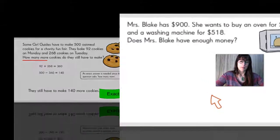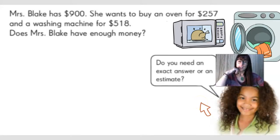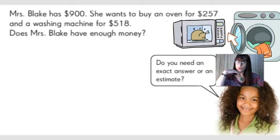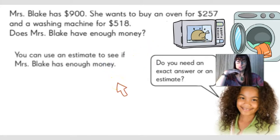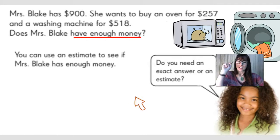Here we have a different scenario. Miss Blake has $900. She wants to buy an oven for $257 and a washing machine for $518. Does Miss Blake have enough money? Do you need an exact answer or an estimate? Here, we just need to find out if the sum of these two items that she wants to purchase is less than or equal to $900. That means we'll just need to use an estimate to see if Miss Blake has enough money. If you see 'have enough money' in your word problem, then you will be estimating the answer.